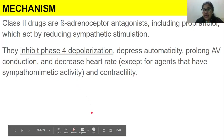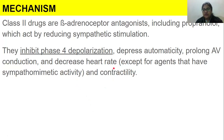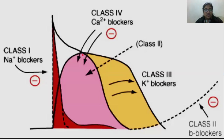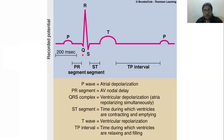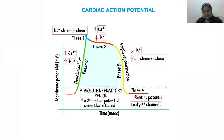In exams, you are often asked which class of drug decreases automaticity, prolongs AV conduction, and so on. So first, we have already talked about phase four — they inhibit phase four depolarization, meaning they are affecting this specific part of cardiac conduction. When we talk about depolarization, what does depolarization mean?